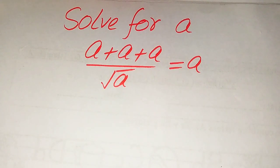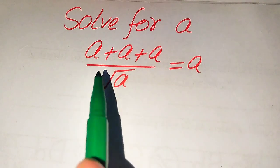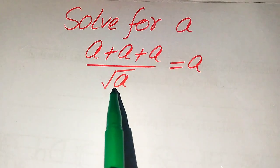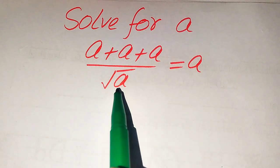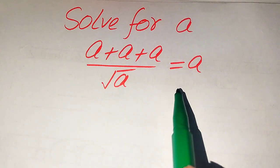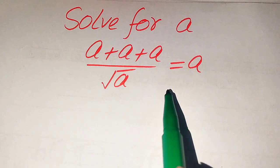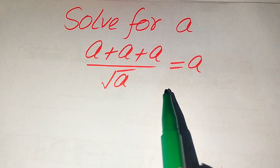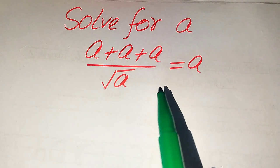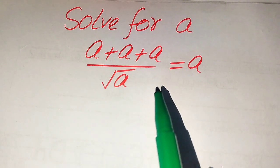Hello everyone. How to solve this problem: find the values of a if we have a plus a plus a, divided by square root of a, equals a. We solve this problem for all values of a. We need to find all the roots of this equation, and at the end verify which roots are solutions and which are extraneous roots.